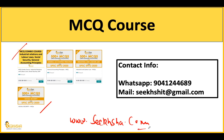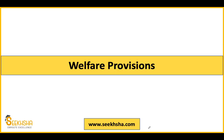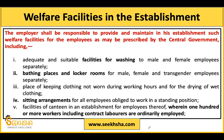First of all, we have to talk about welfare provisions. In the code, it is clearly written that every employer has some welfare measures to introduce in their organization, and from time to time the central government can prescribe which welfare measures can be included. The first welfare measure is washing facilities, and these facilities should be separate for male and female staff, with bathing places and locker rooms.